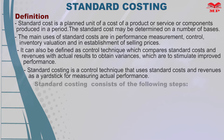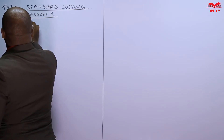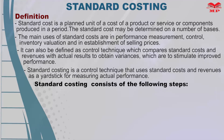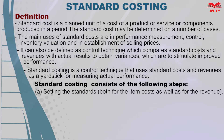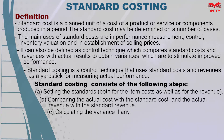These are the steps in standard costing. Step one: setting the standards, both for the item cost as well as for the revenue. Step two: comparing the actual cost with the standard cost, and actual revenue with the standard revenue. Step three: calculating the variance, if any — that is, identifying whether the actual performance deviates from the desired level.